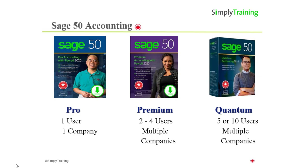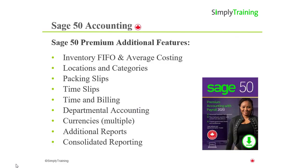Or if a company has four users, all four can be recording transactions at the same time. The Quantum program starts at a five-user license and additional licenses can be added in groups of five or ten users. Also, the Sage 50 Premium and Quantum programs can have the use of multiple companies. For example, a property management company that looks after multiple properties and requires each property to have their own set of books, or a parent company who owns subsidiary companies and all require their own set of books. Sage 50 Premium and Quantum are multi-user and multi-company. Sage 50 Premium is a level up from Pro and offers more features a small business may need, such as additional inventory control with FIFO costing method and inventory locations where inventory can be stored.